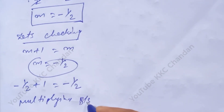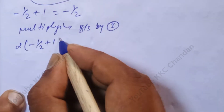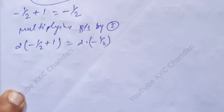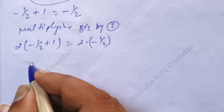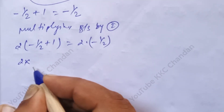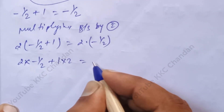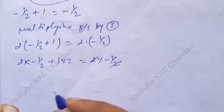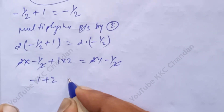So: √(minus 1 divided by 2 plus 1) is equal to √(minus 1 divided by 2). Multiplying both sides by 2: 2 into (minus 1 divided by 2 plus 1) is equal to 2 into (minus 1 divided by 2). The 2s cancel: minus 1 plus 2 is equal to minus 1.